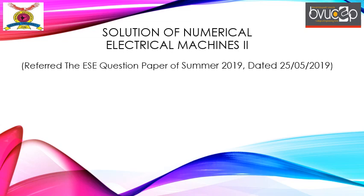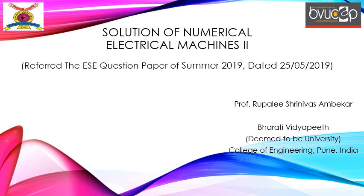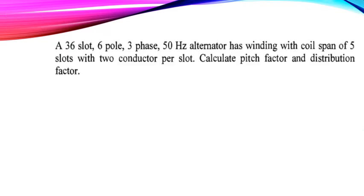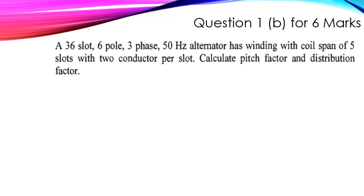Hello everyone. We will apply the basic concepts of electrical machines that we already learned in Electrical Machines 1 and Electrical Machines 2 to solve numerical questions of the end semester examination of Summer 2019. Let us begin with the first question, that is Question 1b of the end semester examination Summer 2019, which is for 6 marks.